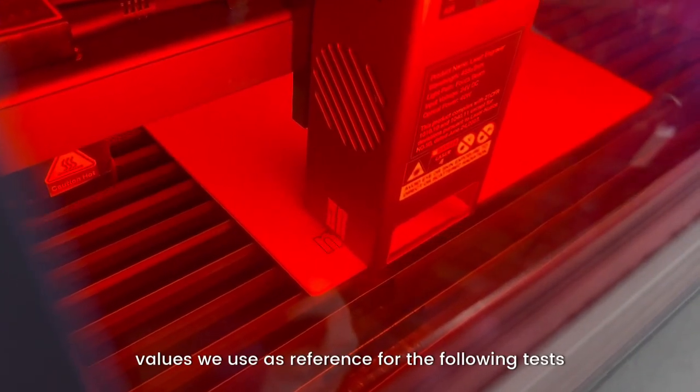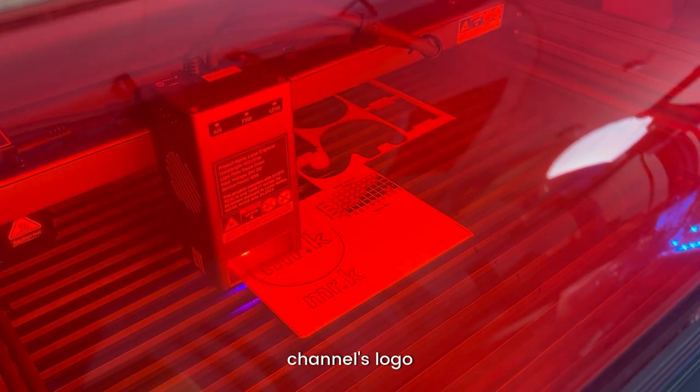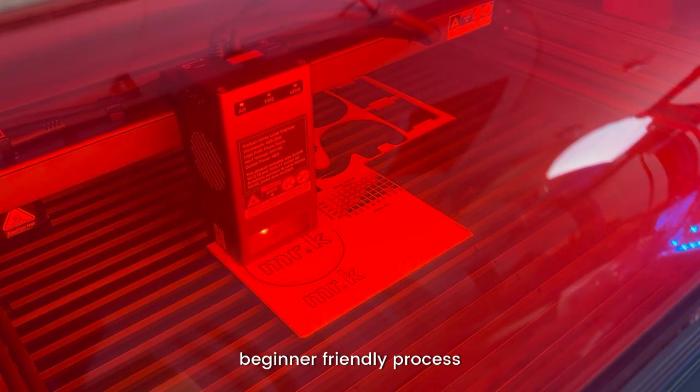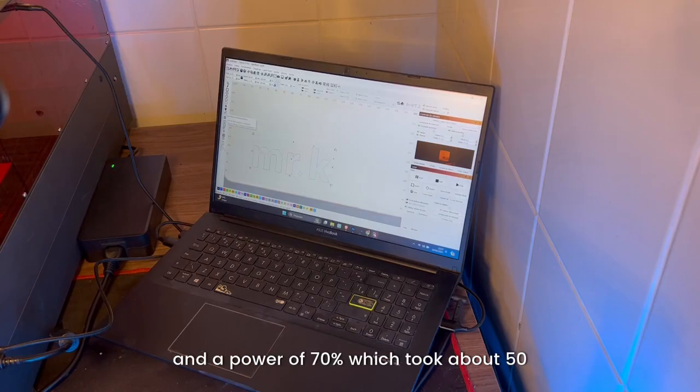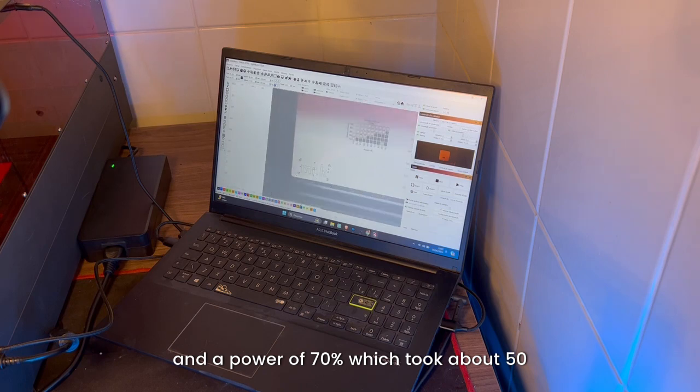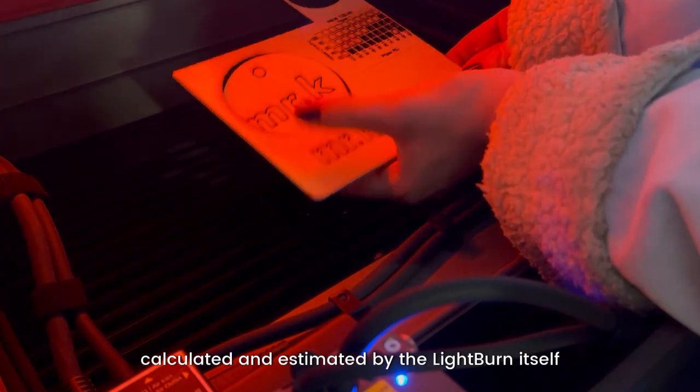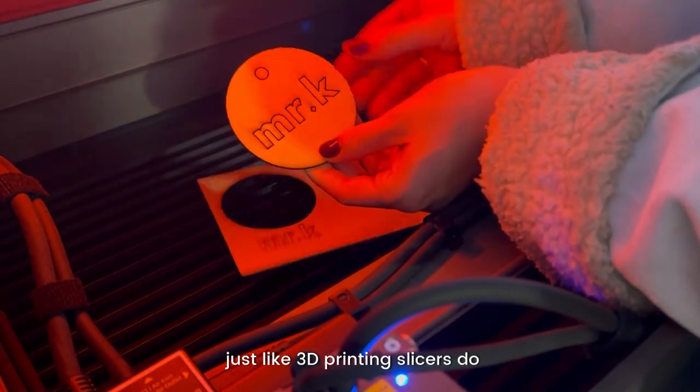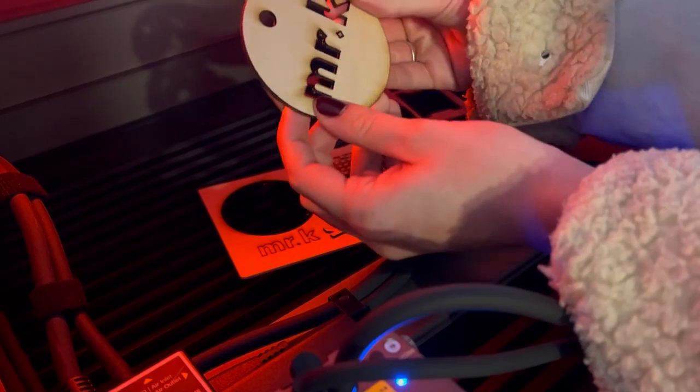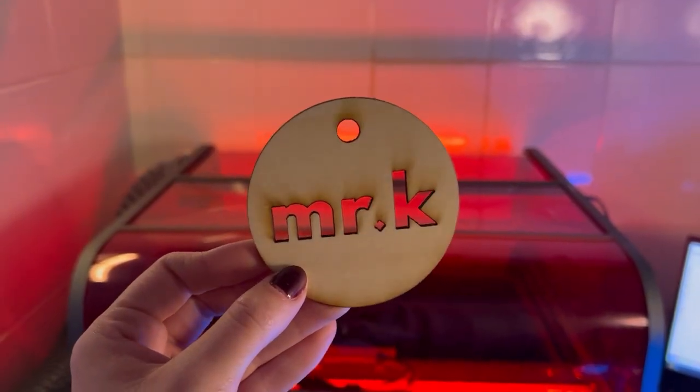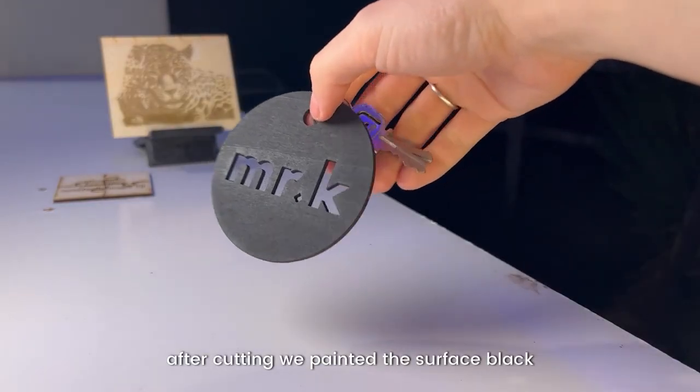Next, we did a cutting test using our channel's logo, and as you can see, it's an extremely simple and beginner-friendly process. For this test we used a speed of 600 and a power of 70%, which took about 50 seconds to complete, a time that is calculated and estimated by LightBurn itself, just like 3D printing slicers do. After cutting we painted the surface black, and there you have it: a beautiful personalized keychain made in less than a minute.